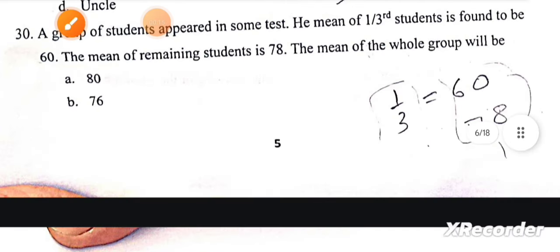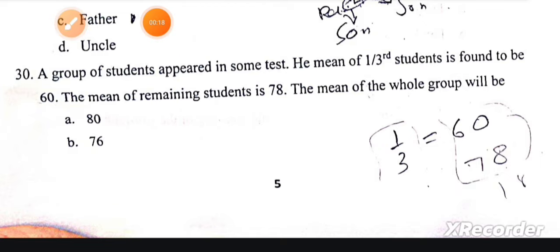Next, a group of students appeared in some test. The mean of one third of students is found to be 60. The mean of the remaining students is 78. The mean of the whole group will be 80.